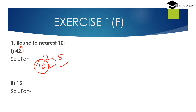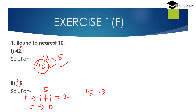Second bit, 15. Here unit place digit is 5, and 5 is equal to 5. So we have to add 1 to the 10th place digit. The 10th place digit is 1, so 1 changes to 1 plus 1, which is 2. And the unit place digit 5 changes to 0. So 15 rounded to the nearest 10 is 20.